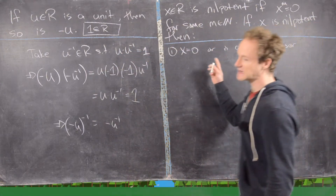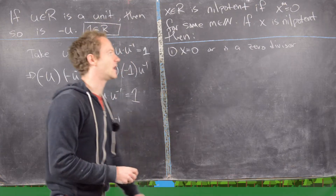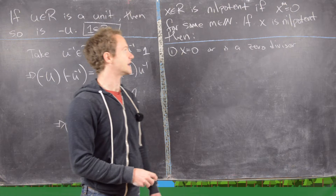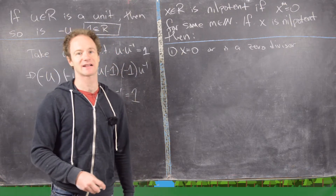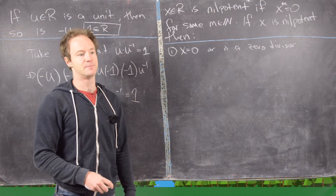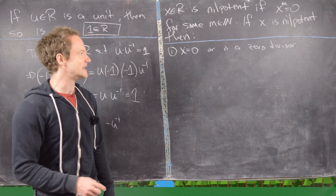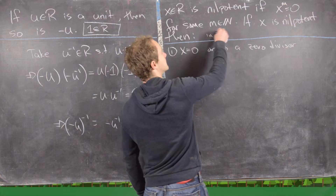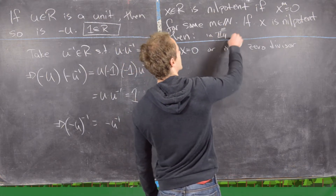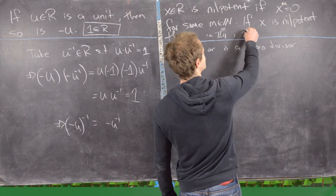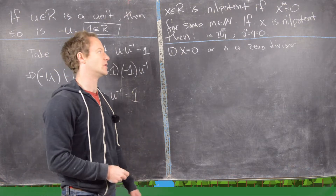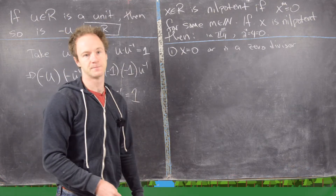The next examples involve nilpotent elements. We say that x in a ring R is nilpotent if x to the m equals 0 for some natural number m. For example, in Z₄, if we take 2 and square it we get 4, which equals 0, so 2 is a nilpotent element in Z₄.